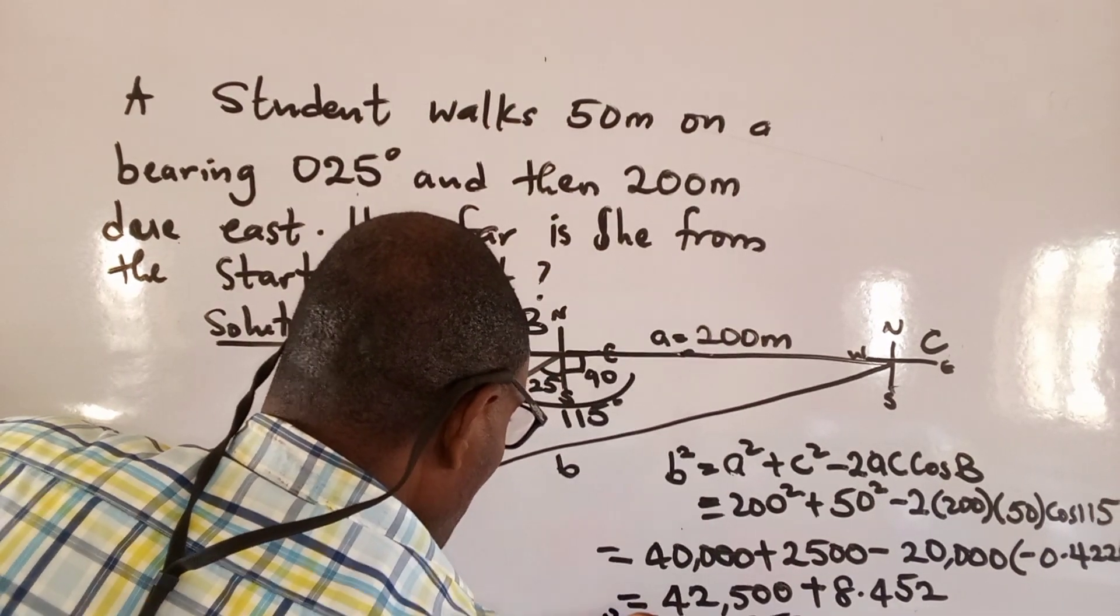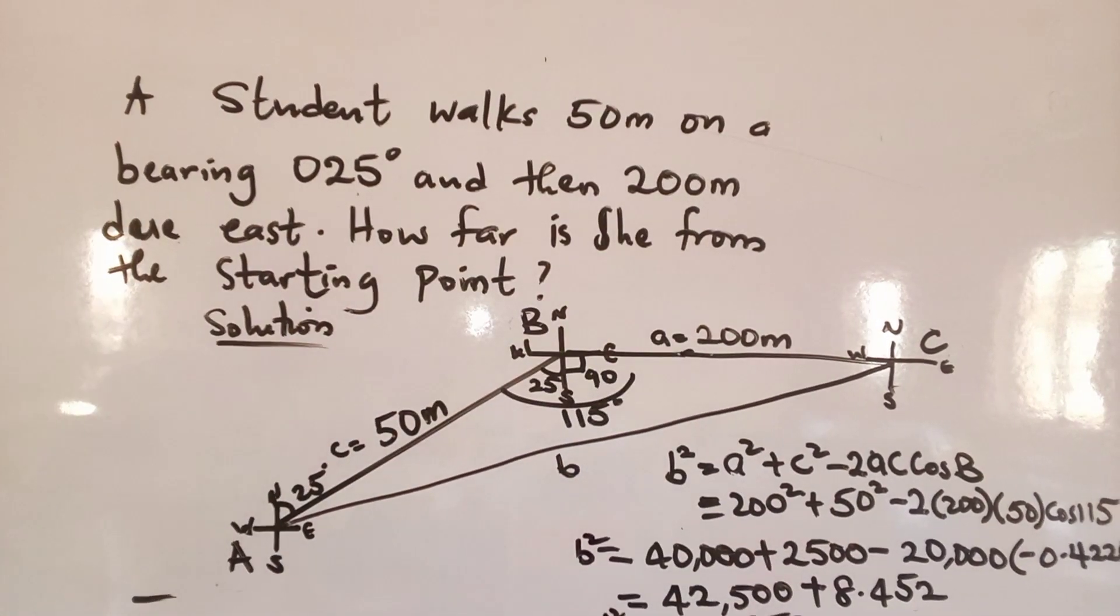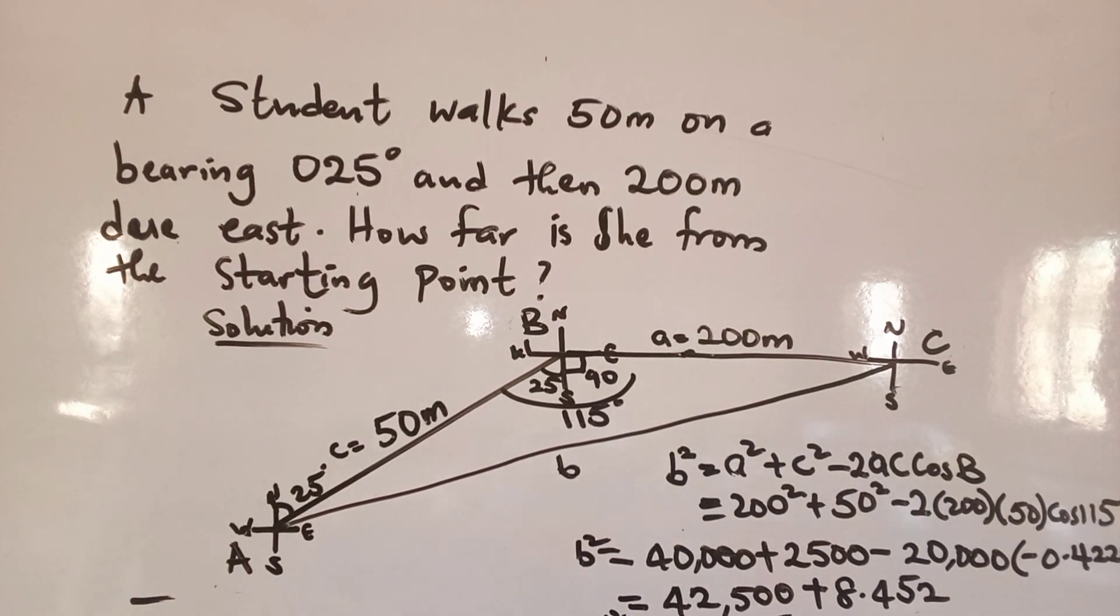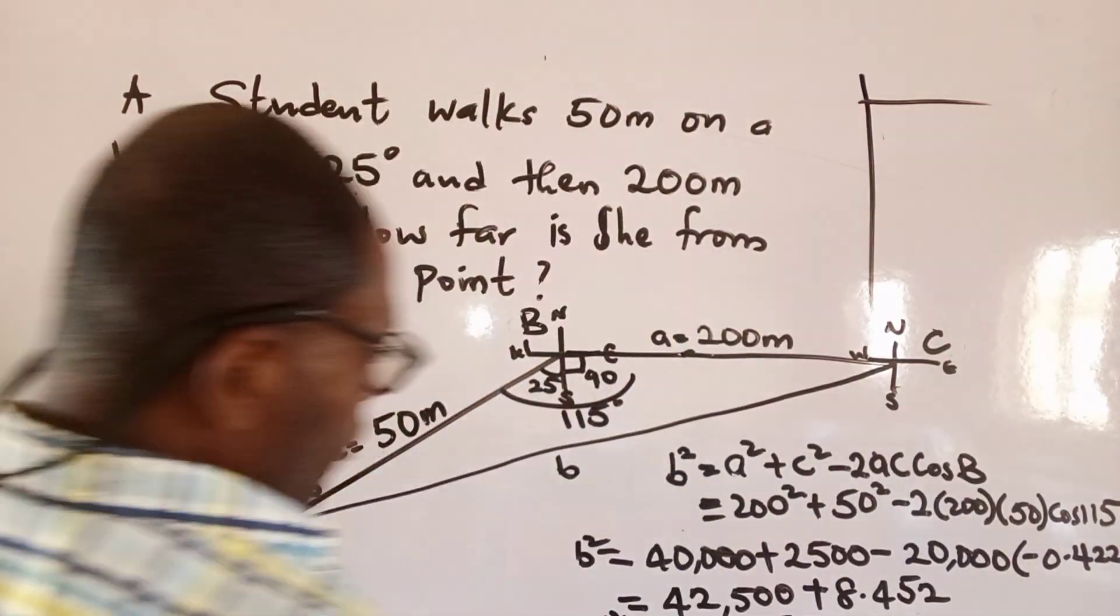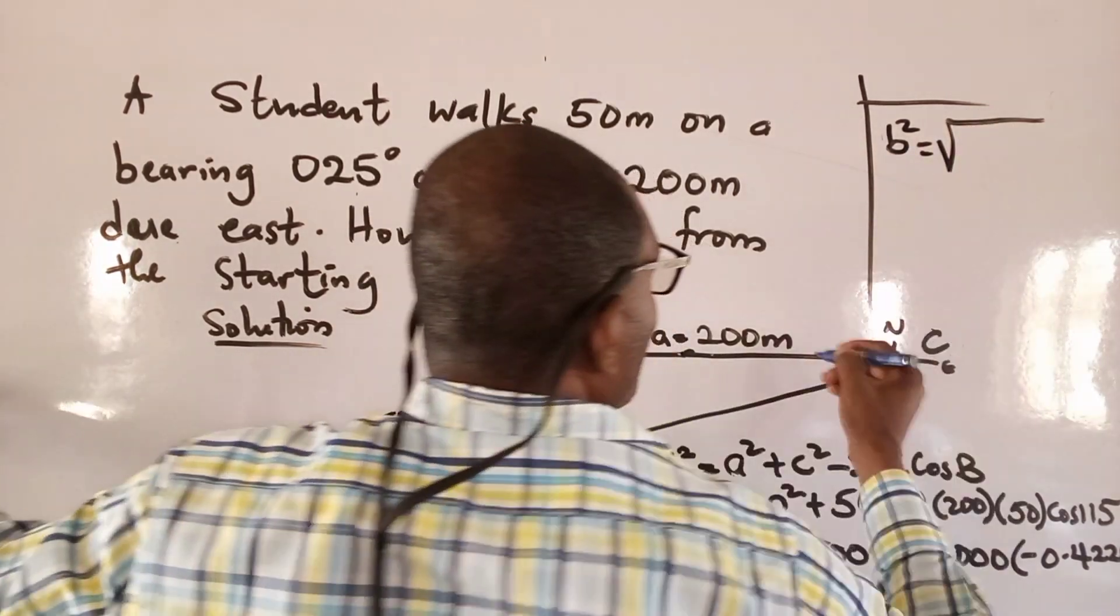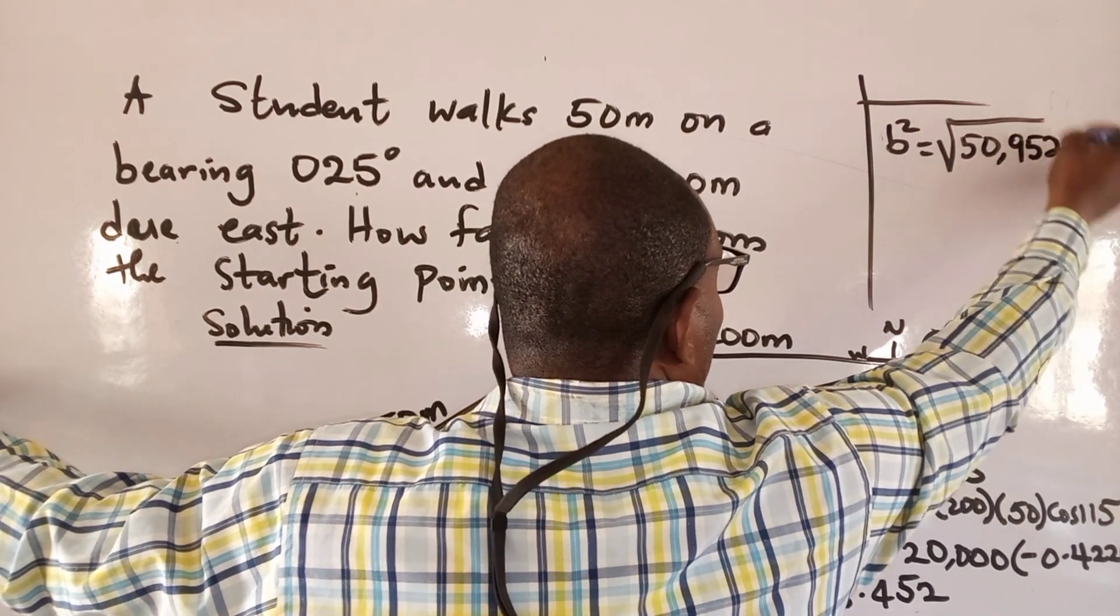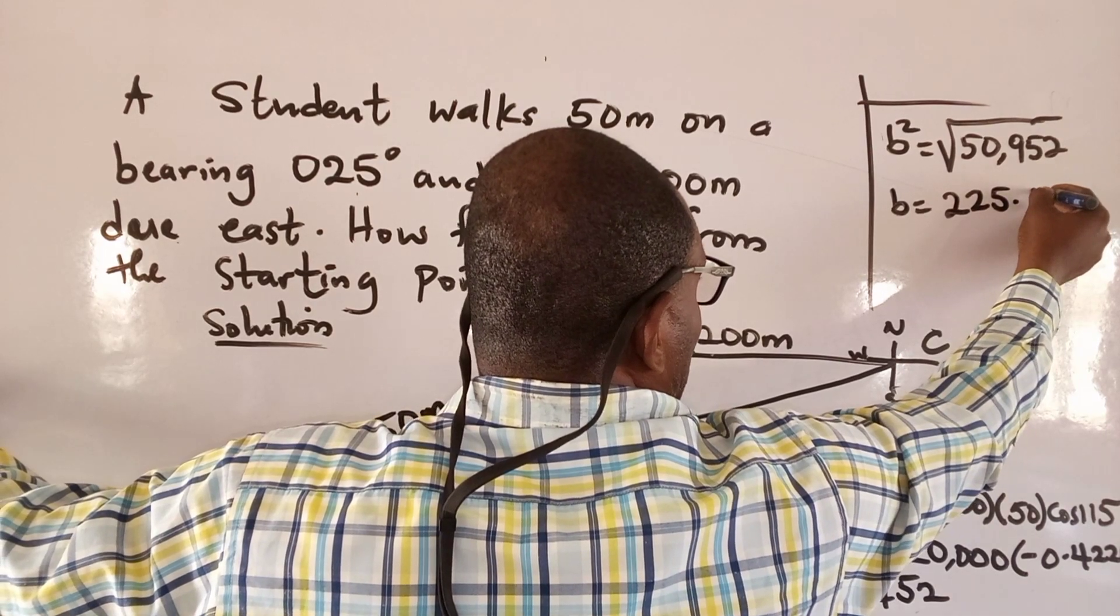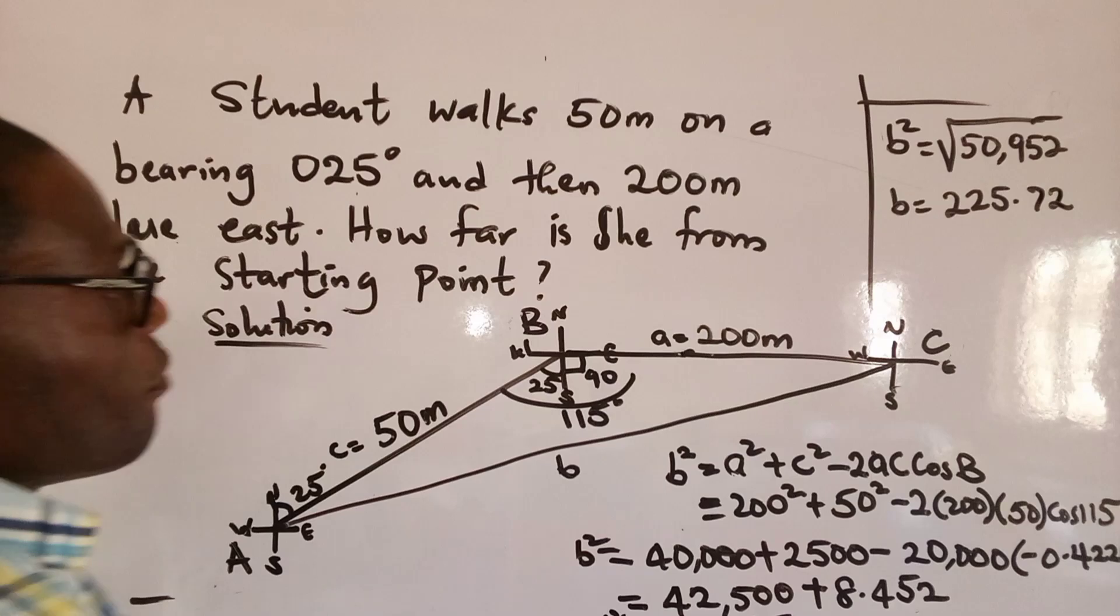So in solving that problem, what would that give me? b² will give me square root of 50,952. Find the square root of that. What would that give me? 225.72. So if I want to put in the whole number, b equals 226 meters.